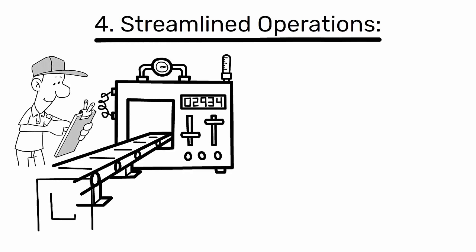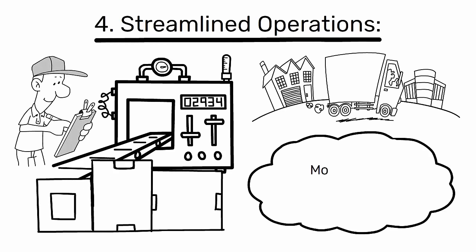Four, streamlined operations. Suppliers can better plan their production and distribution, leading to more efficient operations and potentially lower costs due to economies of scale.